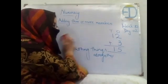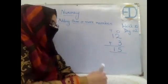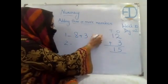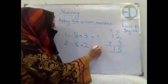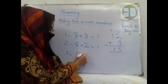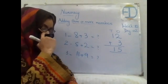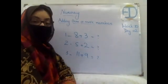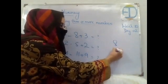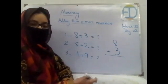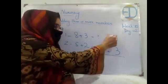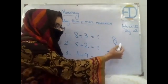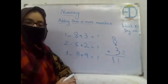Now I'm writing some more sums over here to find the answers. The first step is that we will be writing them in vertical order — one above the other. The second step is writing their place values. This is only one digit, so it has only the ones place. Now 8 plus 3: count 8, 9, 10, 11. So the answer is 11.